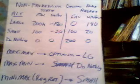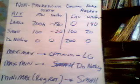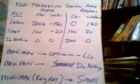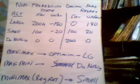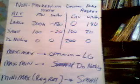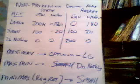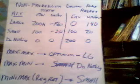I'd like to start a discussion about decision analysis, and we'll start with this example on non-probabilistic decision rules. Later on we're going to assume some probabilities on the states of nature, but for now let's go through a couple of non-probabilistic decision rules.